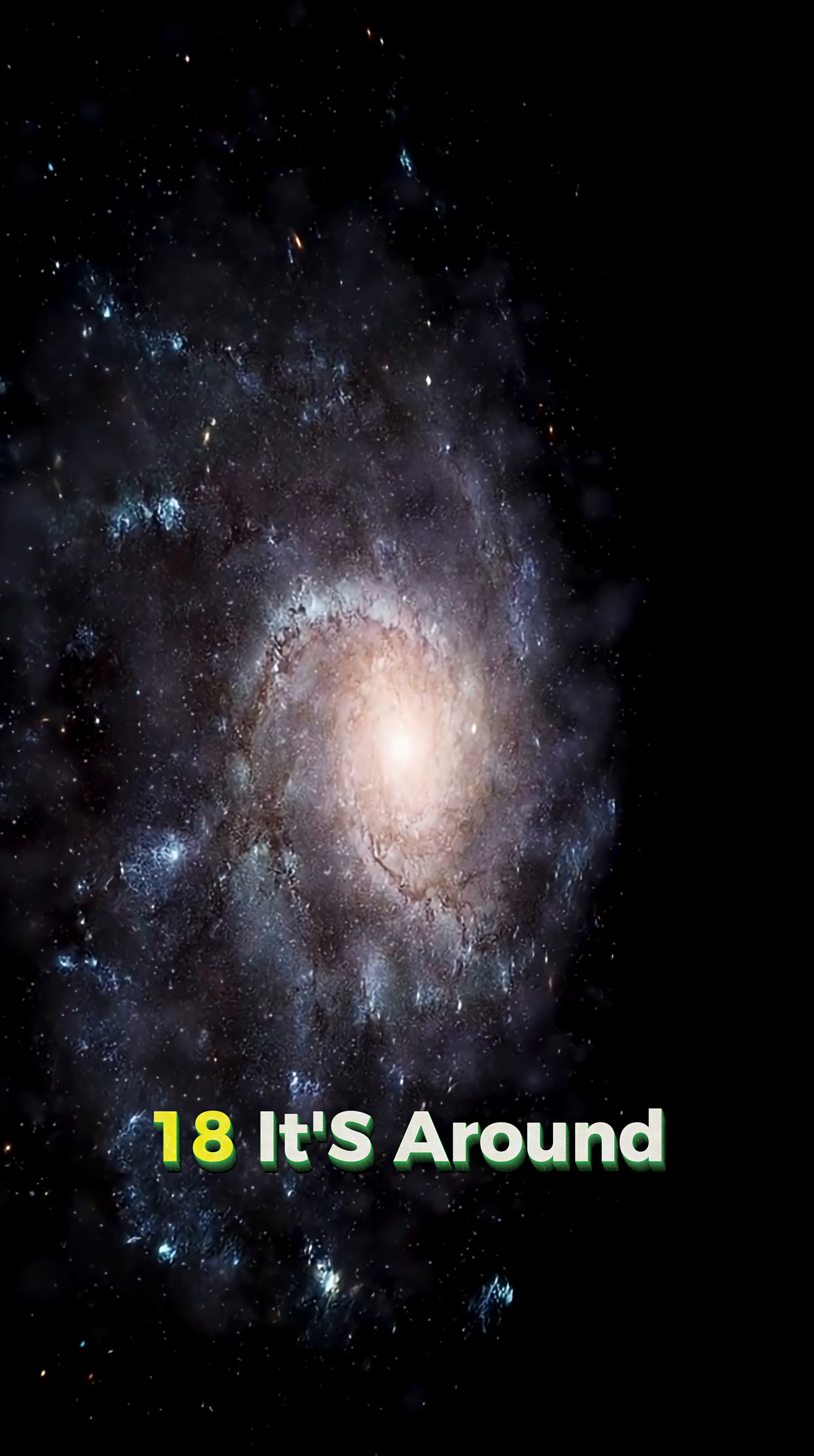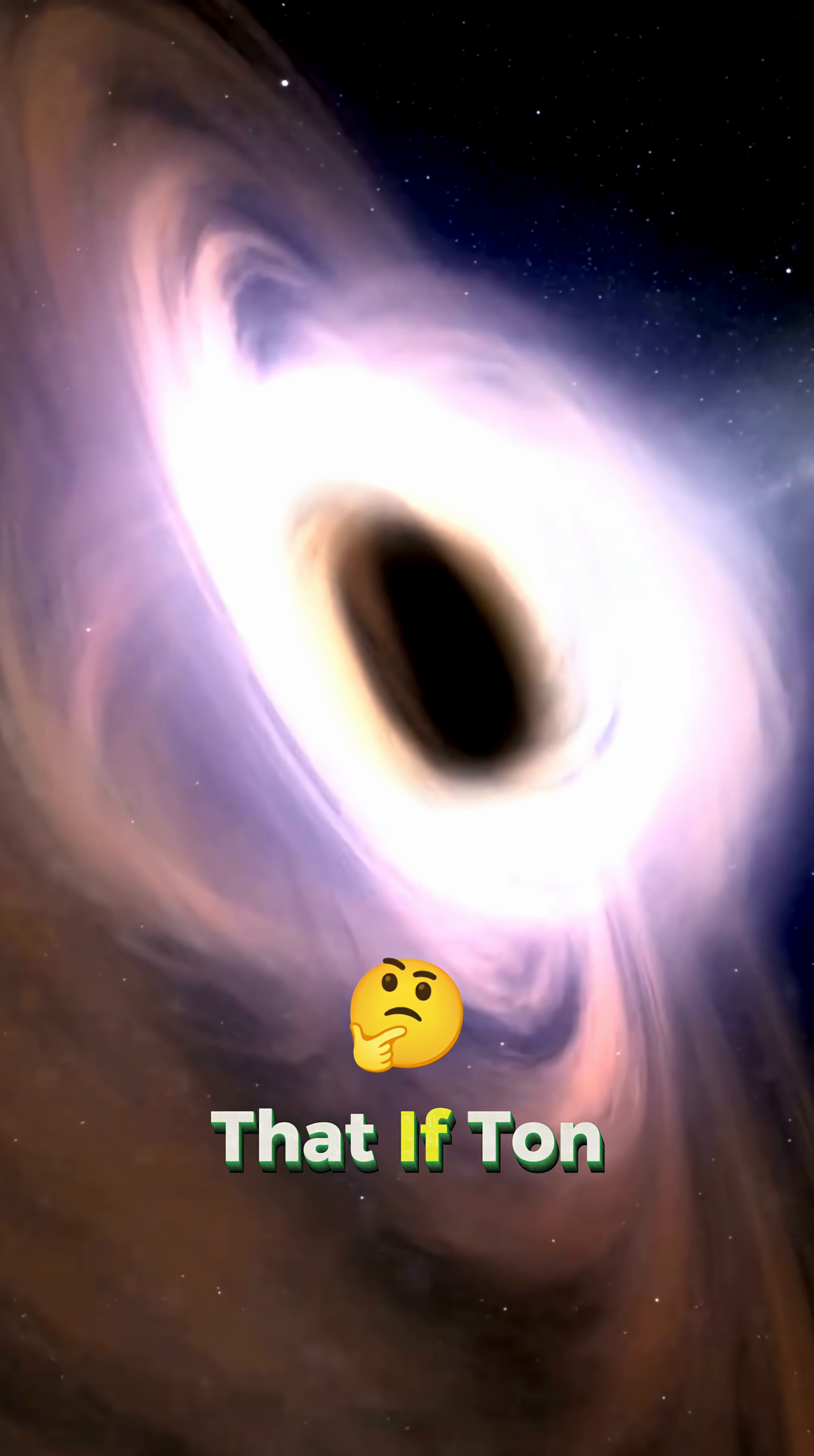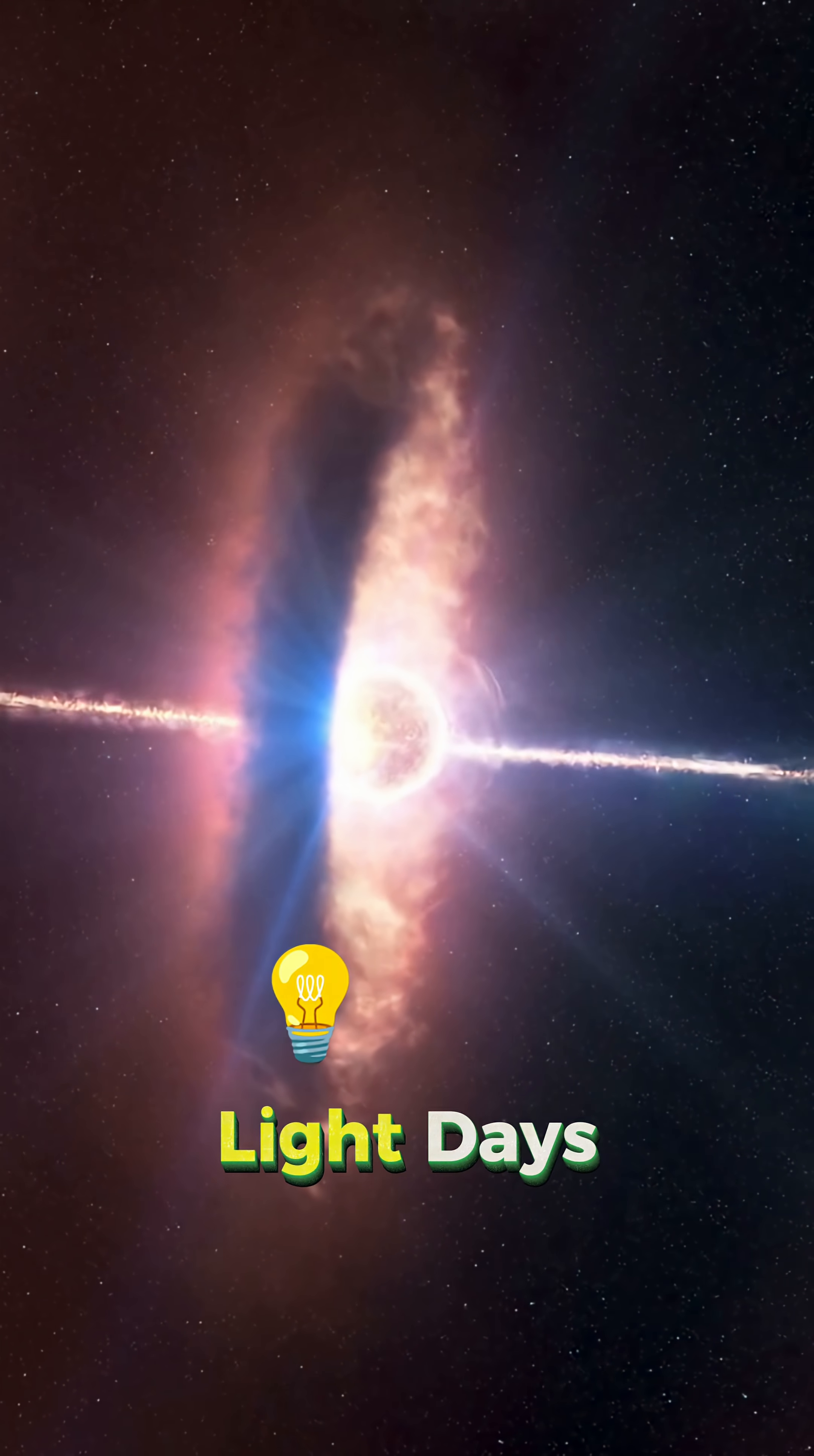But Ton 618? It's around 66 billion solar masses. Its event horizon, the point of no return, is so huge that if Ton 618 replaced our Sun, it would swallow our entire solar system and keep going for almost two light days.